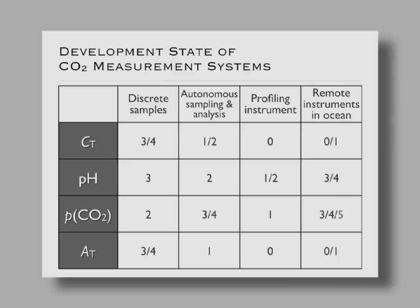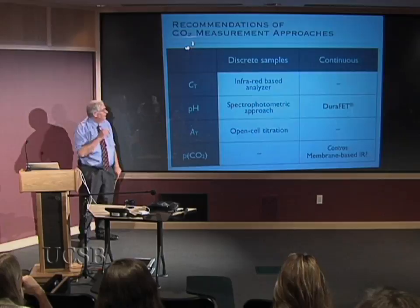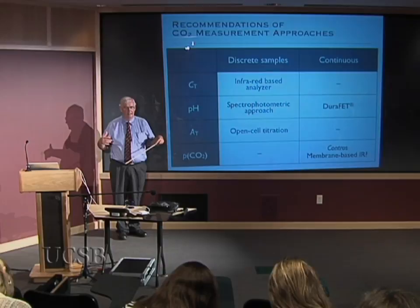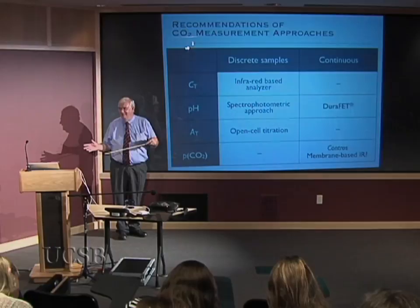My own recommendations: I'd probably go with an infrared-based analyzer for total carbon, then measure pH — either with a FET or spectrophotometric, with advantages and problems to both — and alkalinity with an open cell titration. If you've got all three of those, you can probably characterize your seawater really well. What you'll find is they don't perfectly agree with each other. I've seen cases where the PCO2 calculated from alkalinity and total carbon is 30% different from the PCO2 calculated from total carbon and pH. High-quality measurements can make this work within about 5%, but never perfect.